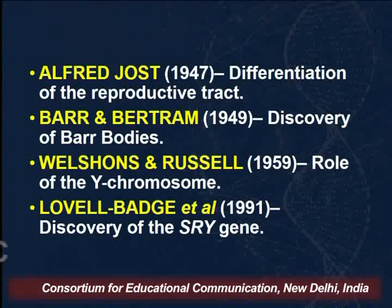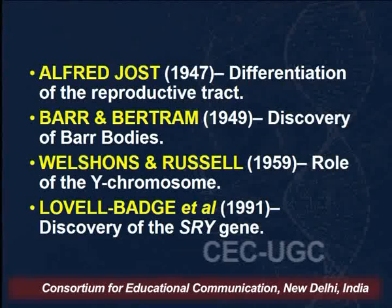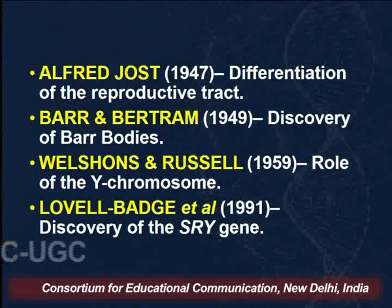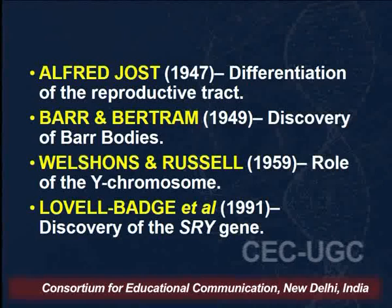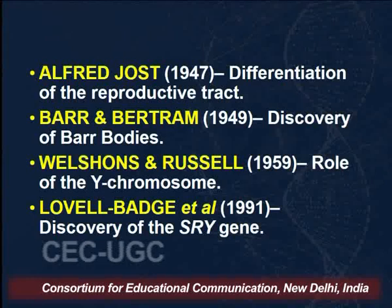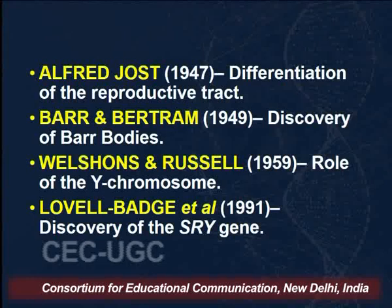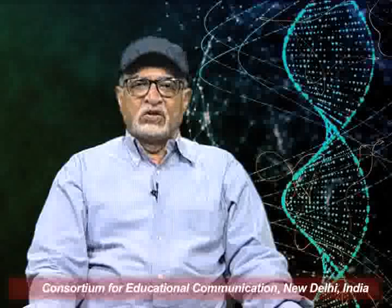Once this discovery was made, a spate of modern discoveries followed. Alfred Jost talked about the differentiation of the reproductive tracts based on the presence of sex chromosomes. Barr and Bertram discovered Barr bodies, which led to a whole fund of new information regarding Mary Lyon's hypothesis and the discovery that one X chromosome is non-functional. The role of the Y chromosome was established by Welshons and Russell, and finally the SRY gene — the sex-determining region of Y — was discovered, which we will spend considerable time on in subsequent meetings.